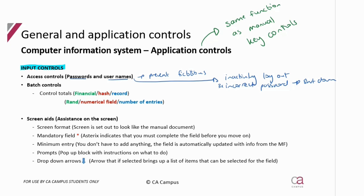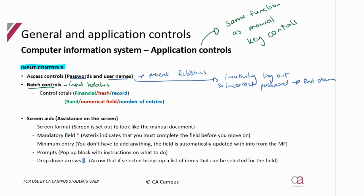Now we get to batch controls, which is a little more complicated. We don't process through batching in our system, so I'll explain it and then show you through an Excel spreadsheet. Batch controls apply when you record or input data in batches — meaning instead of inputting every invoice as it comes in, you wait until you have a collection of invoices and then record them all at once.